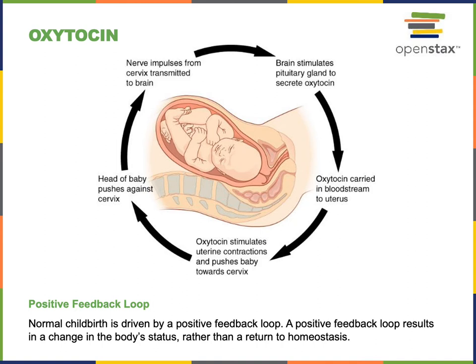Oxytocin then binds to receptors on smooth muscle cells in the myometrium, stimulating contraction of the uterus, pushing the baby towards the cervix, which creates an even greater stretching of the cervix, activating even more secretion of oxytocin in a positive feedback loop until the baby is born.